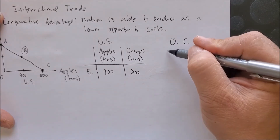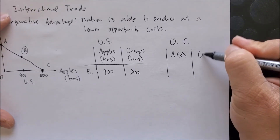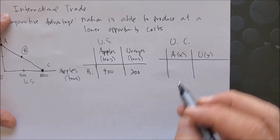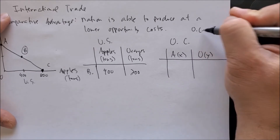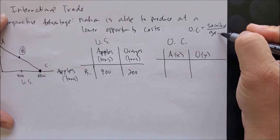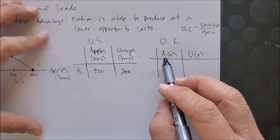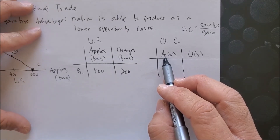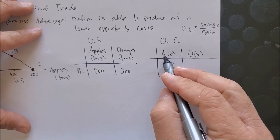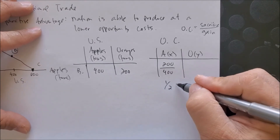We can set up a chart with apples on the x-axis and oranges on the y-axis. Opportunity cost is a function of what you will sacrifice over what you will gain. For the U.S., if we're looking at producing apples, it will sacrifice oranges — that's 200 over what it will gain in apples, which is 400. This gives us one-half of an orange.